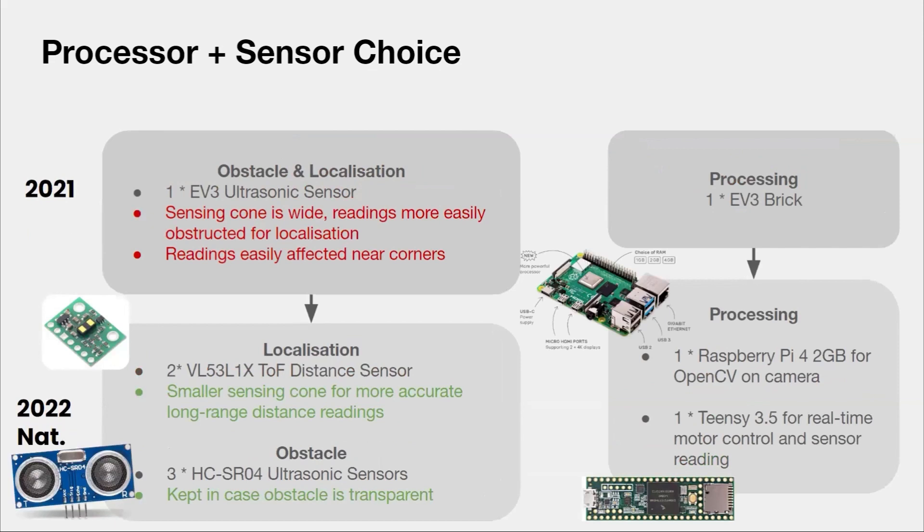In 2021, one ultrasound sensor was used for both obstacle and evacuation zone wall detection. Its sensing cone is wide, which is good for seeing obstacles in front, but not for knowing distance from a far away wall accurately. Because at long distance, many things can enter the sensing cone, such as the ground, causing readings to fluctuate. So this year, we used time-of-flight LIDAR distance sensors, which use light for range finding and have a smaller sensing cone for more accurate long-range readings. But we kept ultrasound sensors in case the obstacle was transparent.